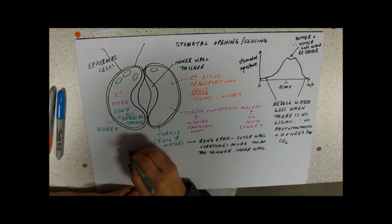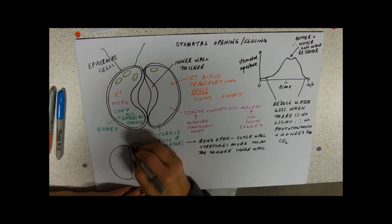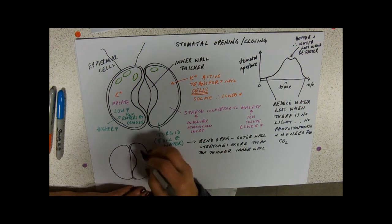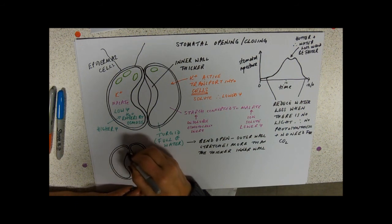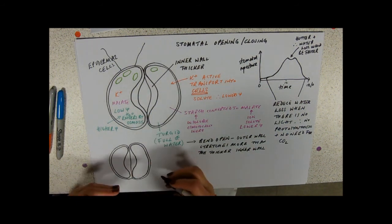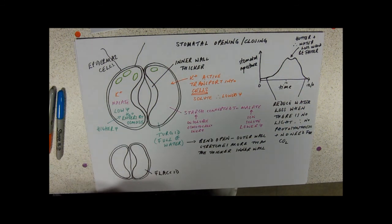So if I just do a little quick diagram here of some flaccid guard cells, I'm just trying to draw my cell wall on, so you know it hasn't changed, and the cell wall is still thicker next to where the opening would appear, still thinner around the outside. But now the cells have sort of collapsed together and we describe those as being flaccid. Flaccid sort of means floppy if you like.